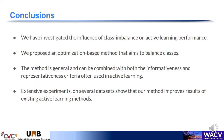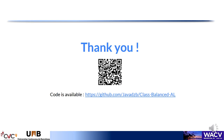To conclude, we studied the influence of class imbalance on the performance of active learning methods. We proposed an optimization-based method for class balancing. Our method is general and can be combined with both informativeness and representativeness criteria. Extensive experiments show that our method improves existing active learning methods. The code of this paper is available at the link shown. Thank you.